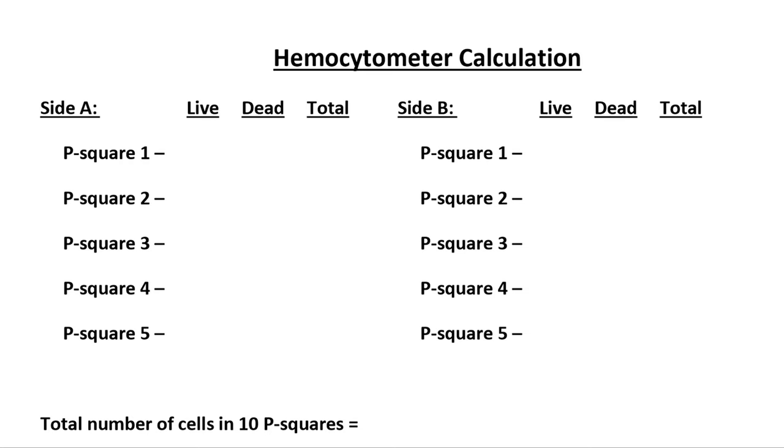We'll now take that data and do our calculations. Let's now complete our calculations for the hemocytometer. Please recall, we counted P-squares. We counted five per side. One, two, three, four, five.